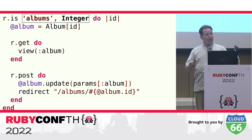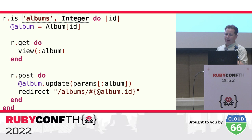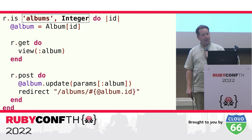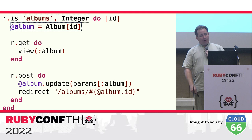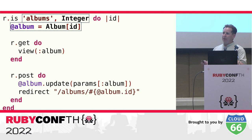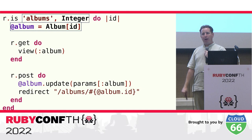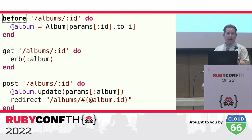By using the Integer class argument, the conversion of the parameter from a string to an integer happens automatically. Another advantage is that this route will only match if the ID provided is an integer — it will not match in other cases. As soon as the branch is taken, the album is retrieved from the database, and in both the GET and POST routes the album instance variable is available. One of the primary advantages of a routing tree is that it allows you to easily eliminate redundant code by moving it to the highest branch where it is shared by all routes underneath.